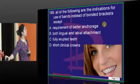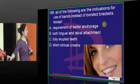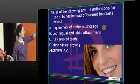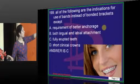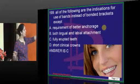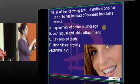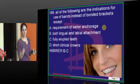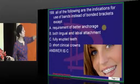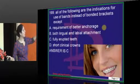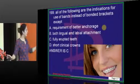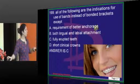All of the following are indications for using bands instead of brackets, except fully erupted teeth. When teeth are fully erupted, you can directly place a bracket — no band is needed. Requirements for better anchorage, both attachments, and short clinical crowns are all indications for using bands. The question is a double negative — make it simple: fully erupted teeth don't need bands.